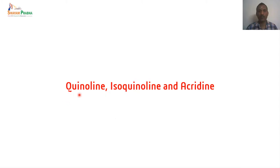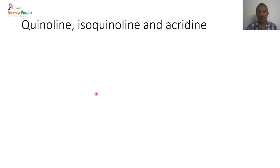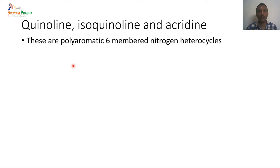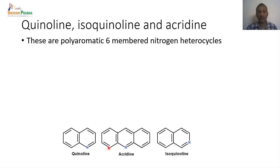Welcome to the next session on Heterocycles. We are going to look at Quinoline, Isoquinoline, and Acridines. These are basically polyaromatic six-membered nitrogen heterocycles. Quinoline has two six-membered rings, Isoquinoline also has two six-membered rings, whereas Acridine has three six-membered rings. Quinoline and Isoquinoline are positional isomers: in Quinoline, nitrogen is at position 1, and in Isoquinoline, nitrogen is at position 2.